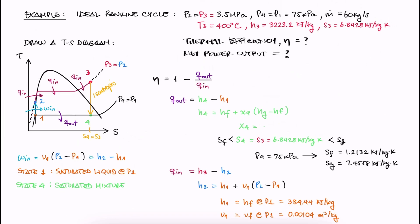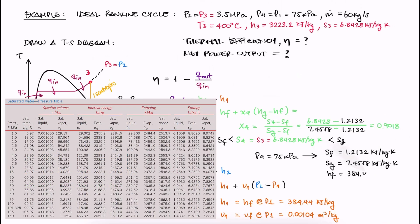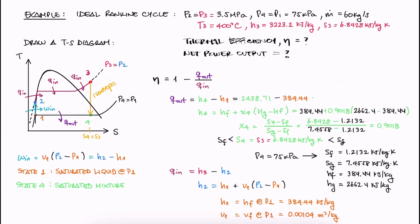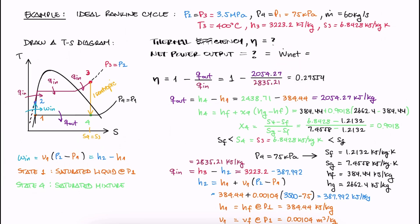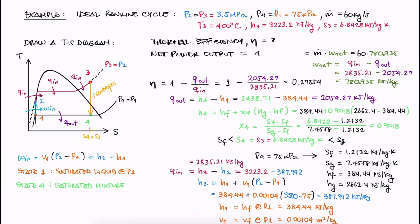And that we need to calculate the quality of state 4 with S4, Sf, and Sg. H4 is therefore also calculated with Hf, Hg, and the quality we calculated, and we substitute that value to find Qout. With Qin and Qout, we find the efficiency. As for the net power output, we know that it's equal to the mass flow rate, given, times lowercase w net, which is just the difference between Qin and Qout. We substitute the values and we find the net power output. And that's it!